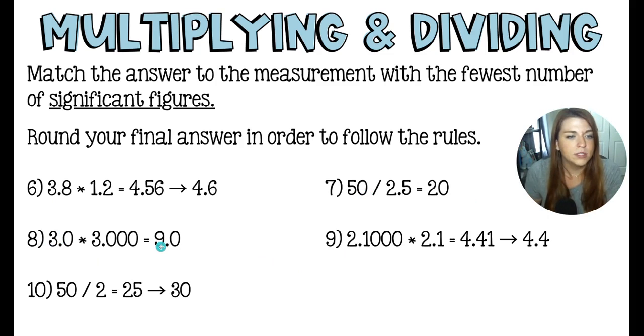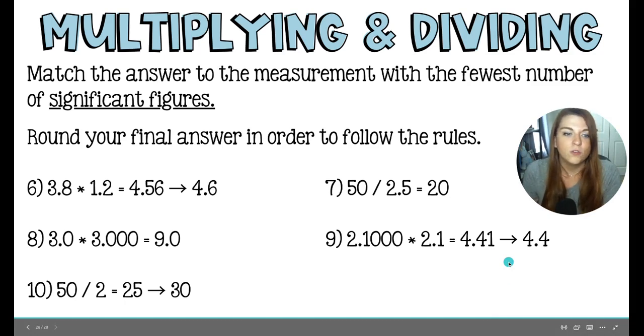Now over here, we have three times three, but we're working with zeros just for the sake of the sig figs. This first three, the 3.0, has two significant figures, which is fewer significant figures than this guy with four. So we are only going to round our answer to 9.0. And in this way, we're not adding any extra zeros or any extra precision. In number nine, we have 2.100 times 2.1, and that comes out to 4.41, which needs to be rounded to have two significant figures in total. So this one is not big enough to kick the four up. So it's just going to get dropped and we are left with 4.4.